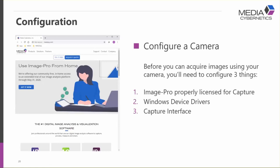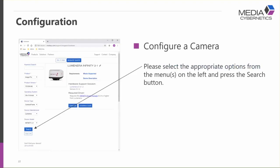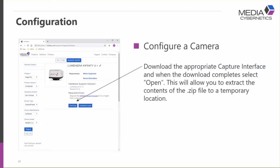The final thing to configure is the capture interface, which connects Image Pro to your camera. Go to mediasci.com/support/hardware, or visit the support section, select Image Pro, and link to the hardware support section. This takes you to the hardware support center where you use combo boxes to select your product, operating system, camera manufacturer, and camera model. When you hit Search you should get one option — in this case configured to work with the Lumenera 2-1. Press Download to get a zip file.